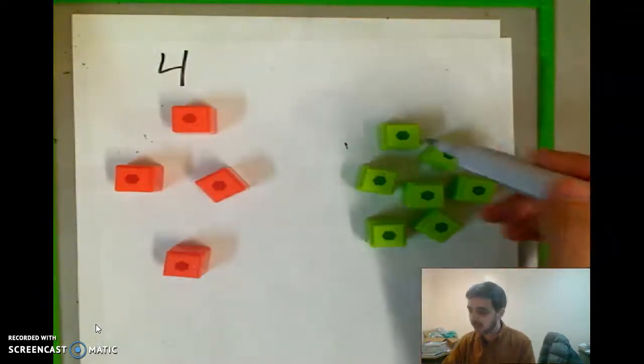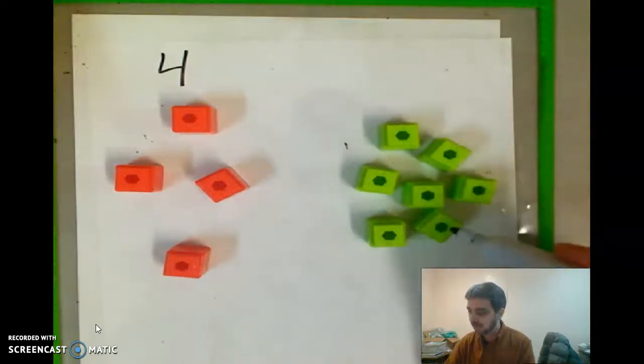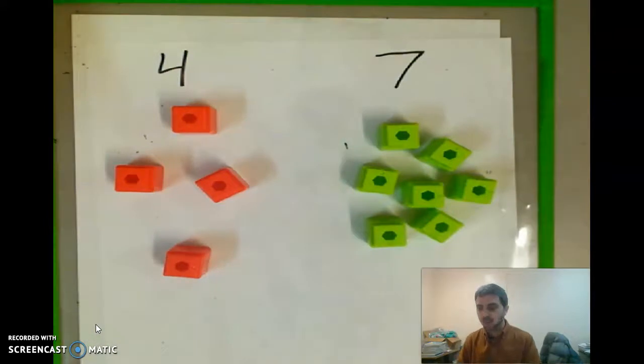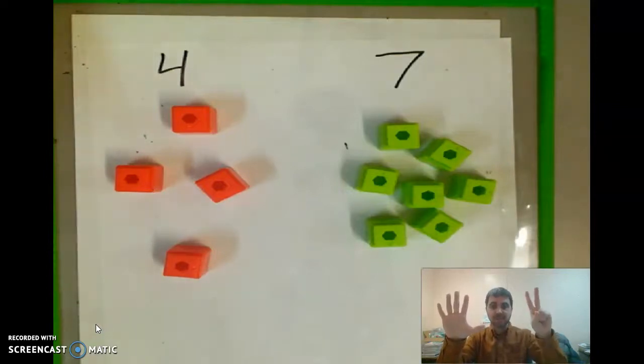Over here we have one, two, three, four, five, six, seven cubes. Now seven does come after four. So if you have four, five, six, seven, seven should be the bigger number.